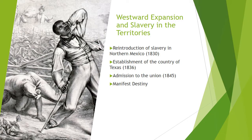One of the precipitating factors — really the main precipitating factor for the Civil War — was the acquisition by the United States of Western territory, and then the struggle over whether that territory would be free states or slave states. Between 1830 and 1860, hundreds of thousands of Americans moved west, including Native Americans and slaves who were forcibly relocated. American acquisition of Mexican territory reignited the debate about slavery in the territories.